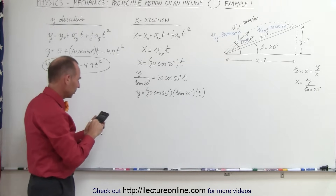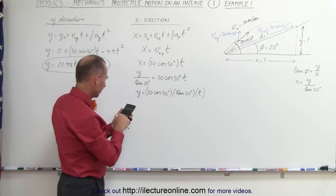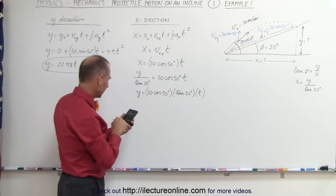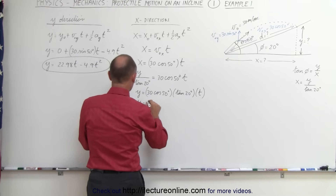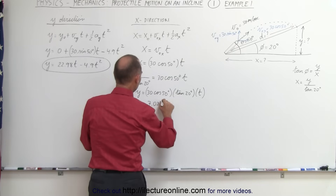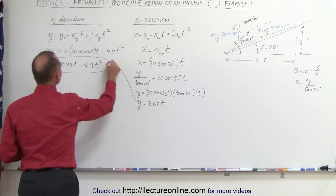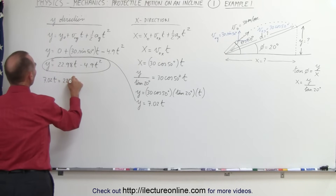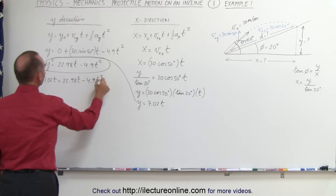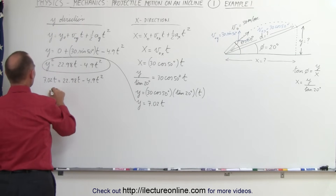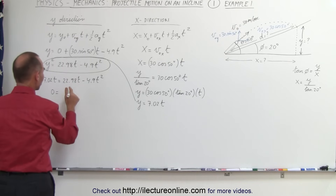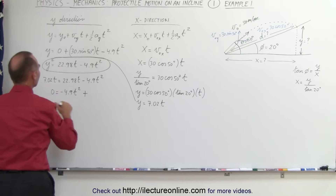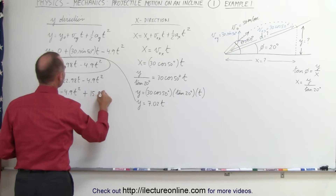We simplify by taking tangent of 20 times cosine of 50 times 30, which gives us y equals 7.02 times t. Plugging that in: 7.02t equals 22.98t minus 4.9t-squared. Moving terms to one side: 0 equals minus 4.9t-squared plus 15.96t.